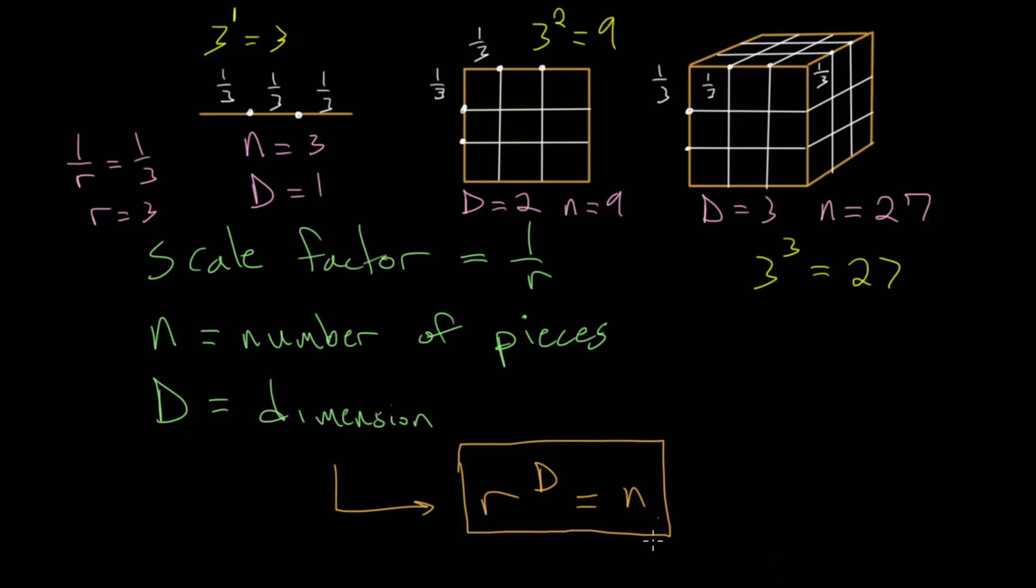With this equation, we can use this to figure out the dimension of various fractals. Now, we chose to divide these into thirds, but that choice was arbitrary. We could have chosen a different scale factor.